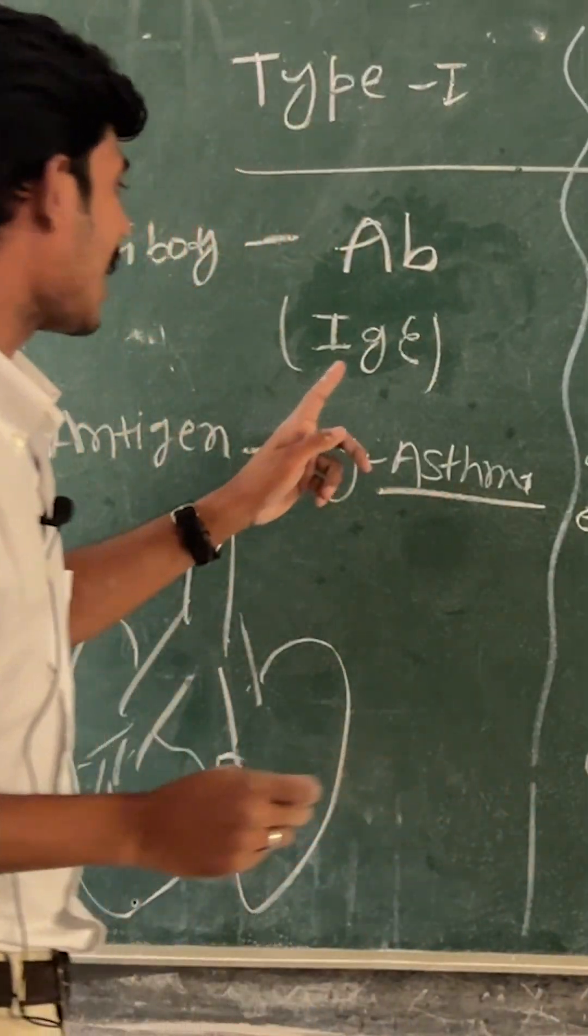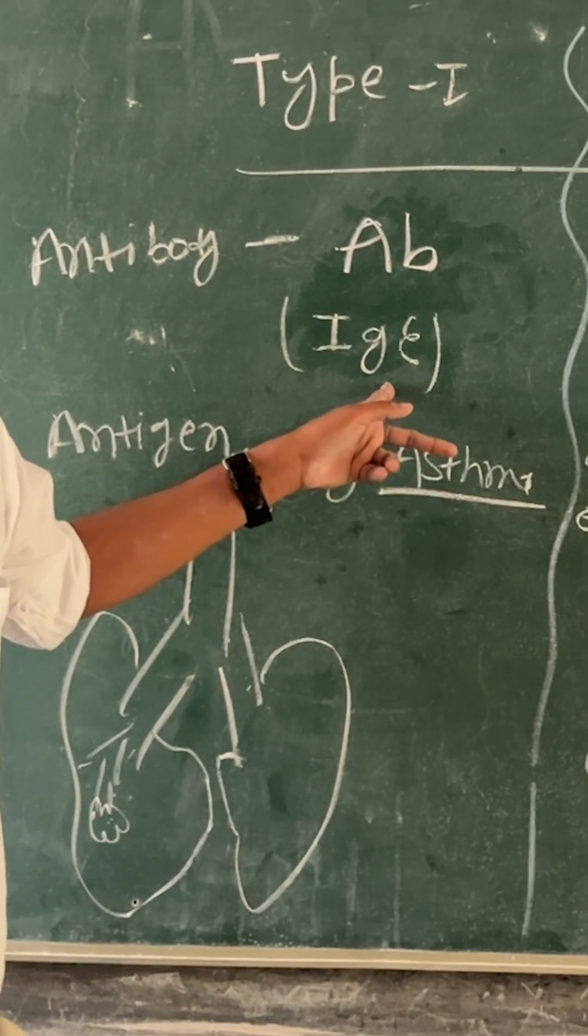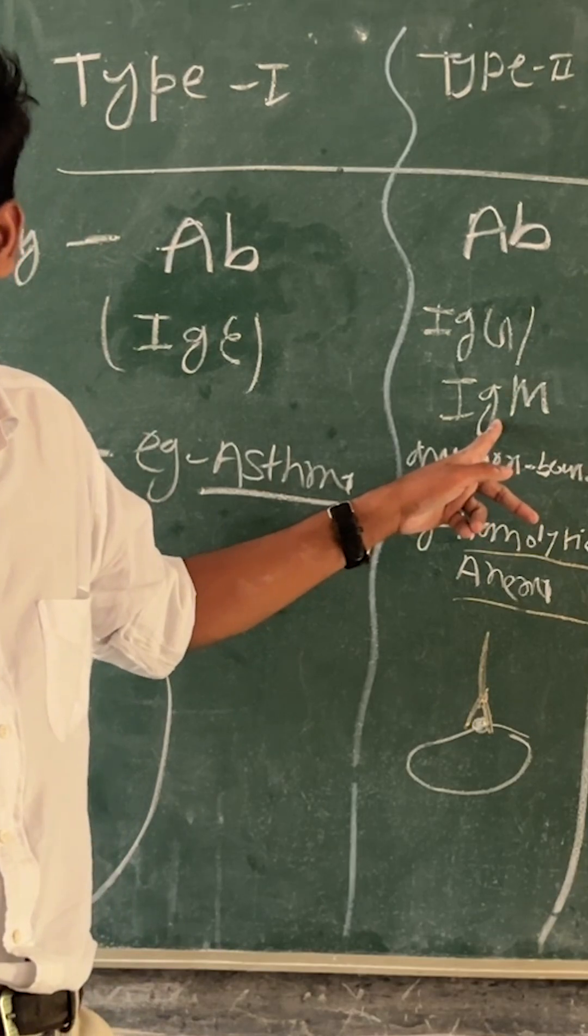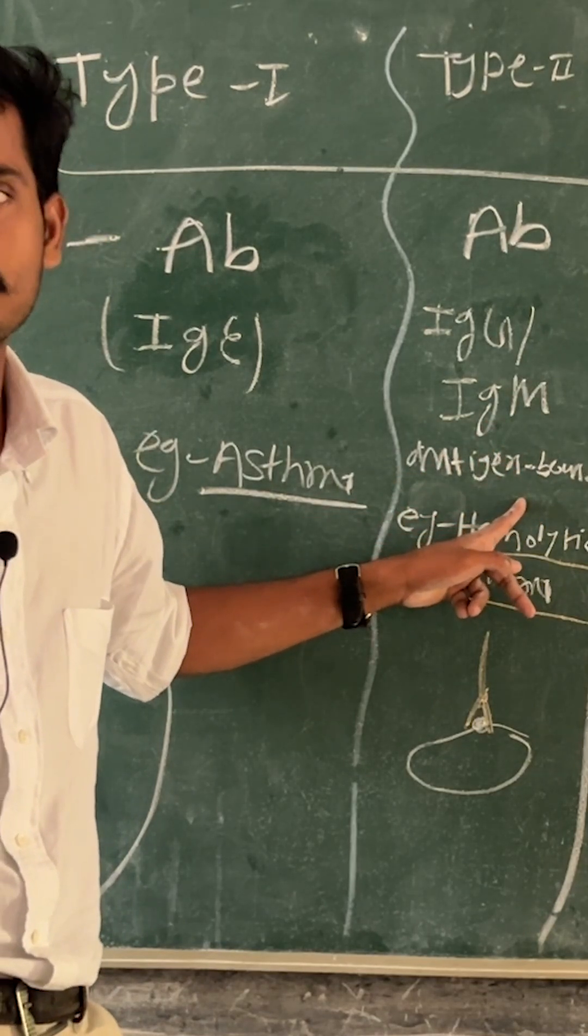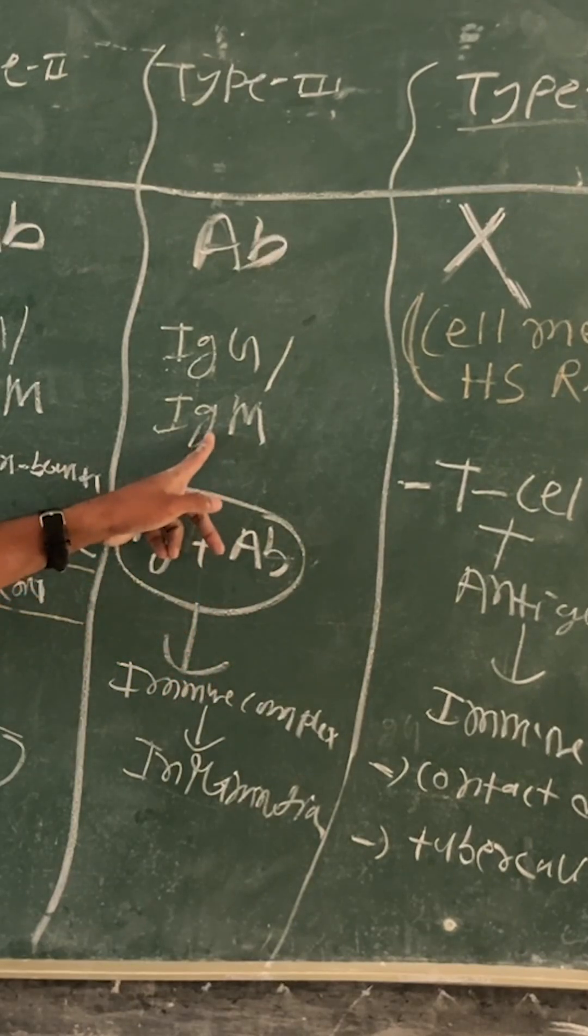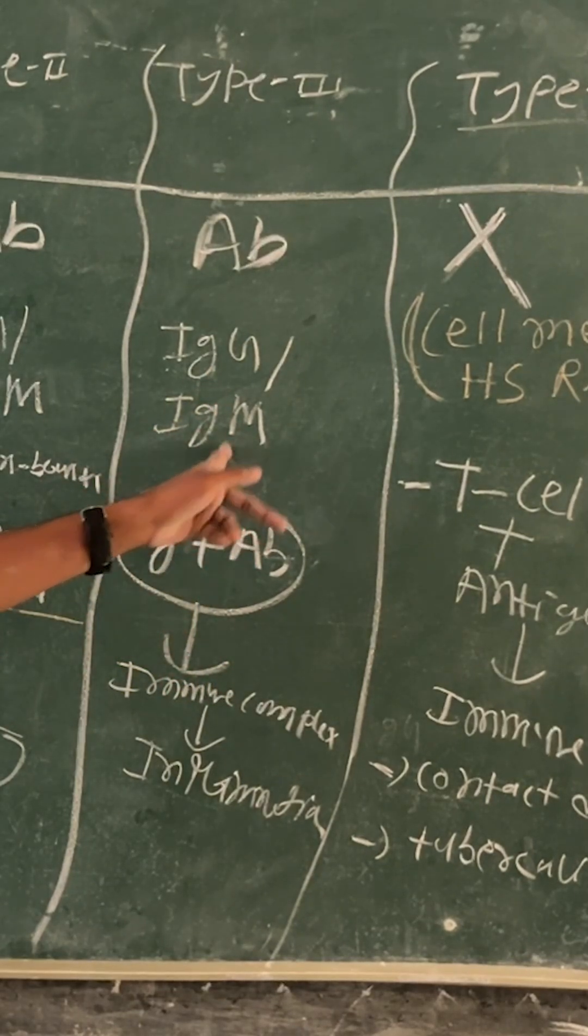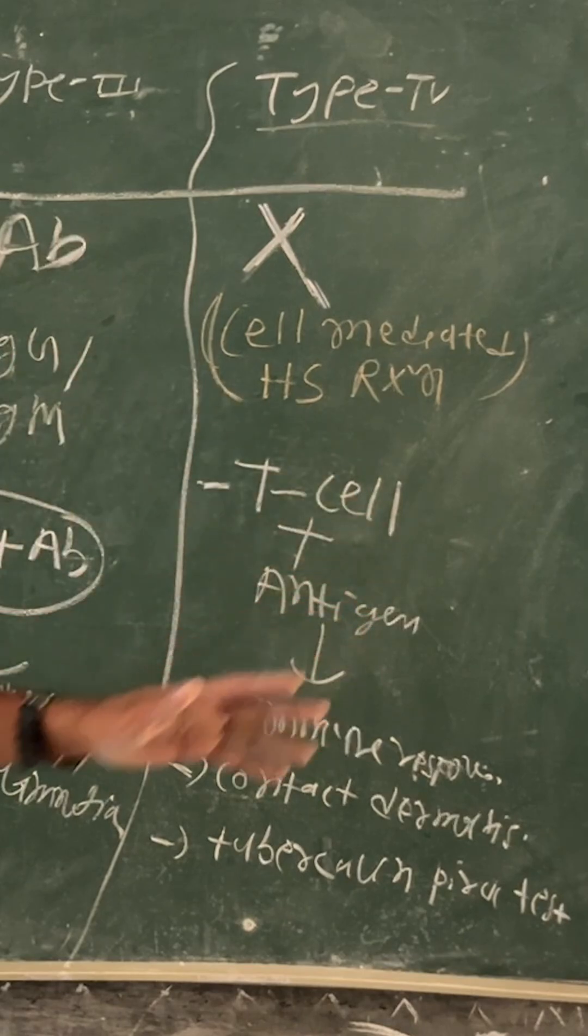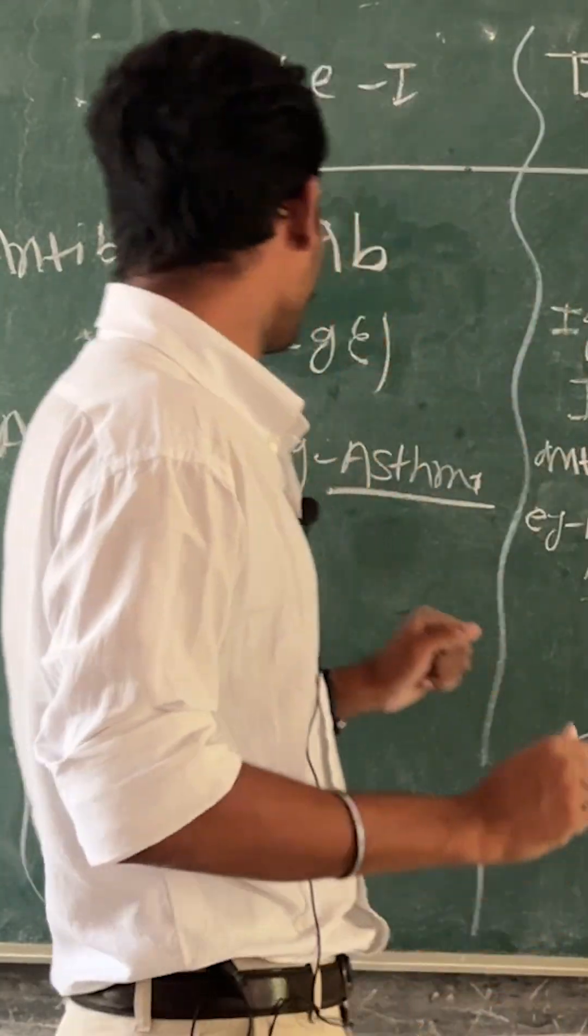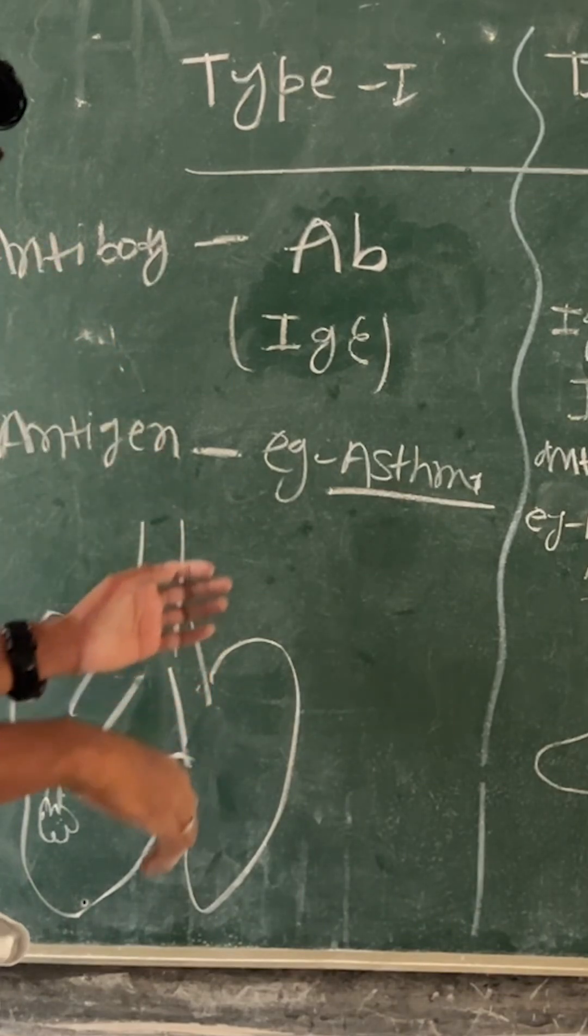The antigen is free. In the second one, IgG or IgM is involved, and antigen is fixed over the membrane. In the third one, the antigen is free, and the antibody involved is IgG or IgM type. In the fourth one, no antibody—the cell is involved, T cells.